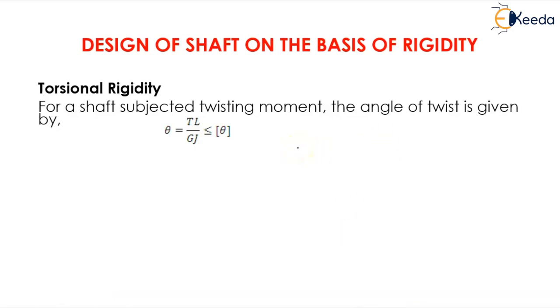In the theory of pure torsion or torsional equation, we have learned that T/J equals G theta by L. From this, I can interchange the position of all the values, so this becomes TL upon GJ should equal theta.